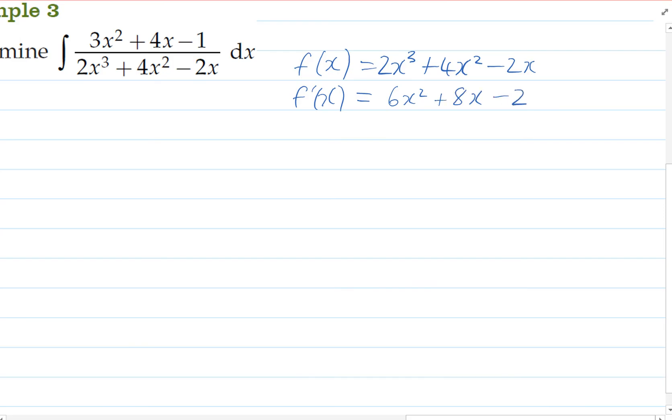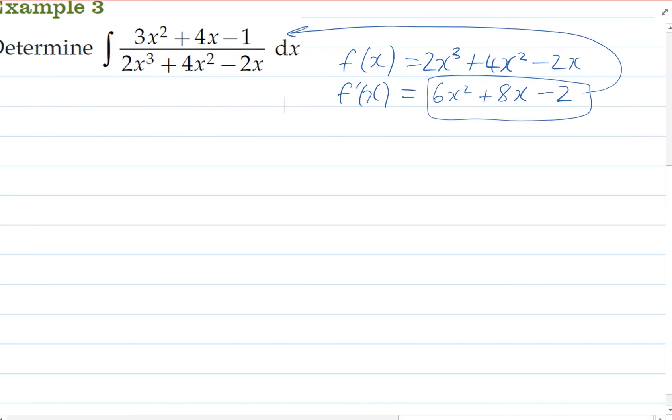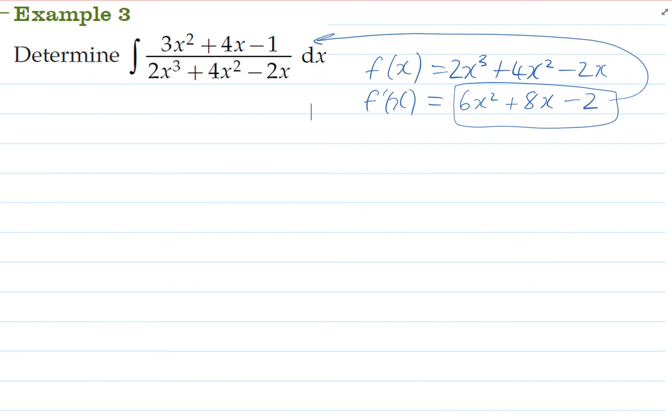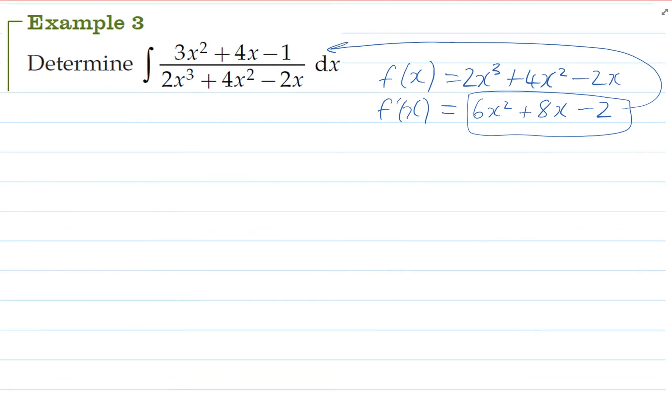Now, if you're comparing that to the top of our fraction, you'll notice that it's not the same, but it is a multiple. It's simply the top times by 2. And so in order to undo that, we will need to make sure that when we evaluate our integral, we times it by a half to counteract that effect.